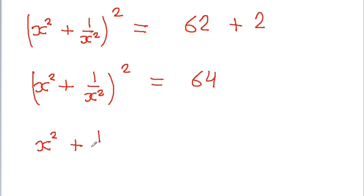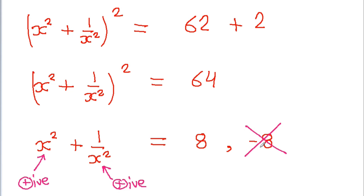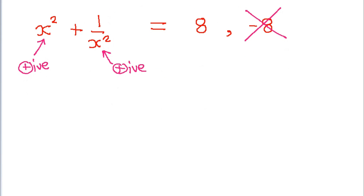So x² + 1/x² is equal to 8 or minus 8. But here x² is positive and 1 by x² is also positive, so the sum of two positive numbers can never be negative. Therefore minus 8 is not possible, and thus x² + 1/x² equals 8.